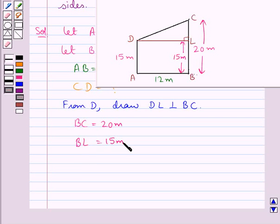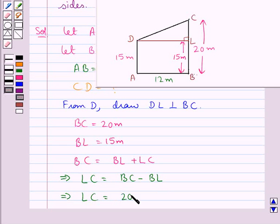Now from the figure we have BC is equal to BL plus LC. So this means LC is equal to BC minus BL. That is, LC is equal to 20 minus 15 meters.